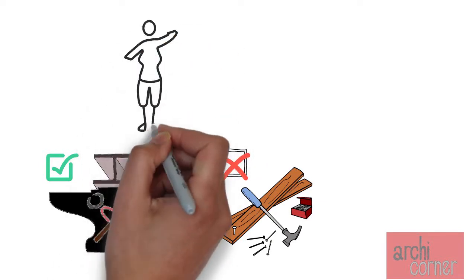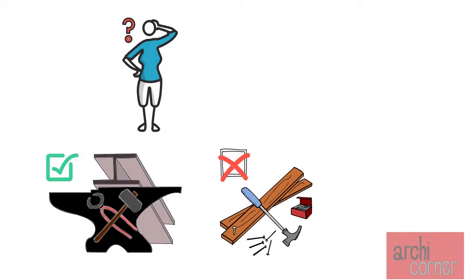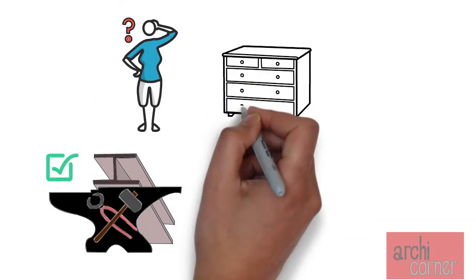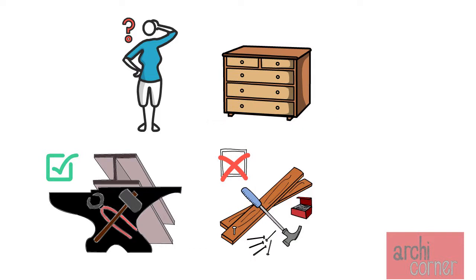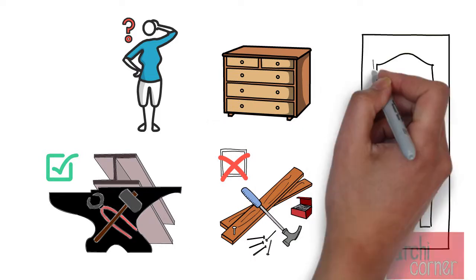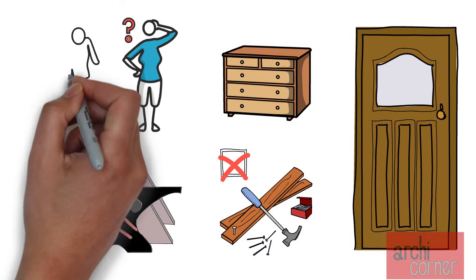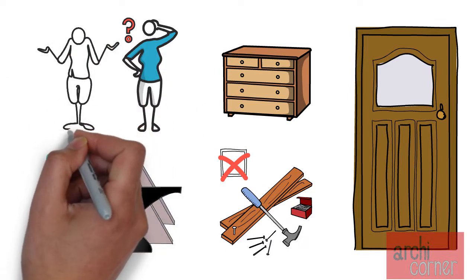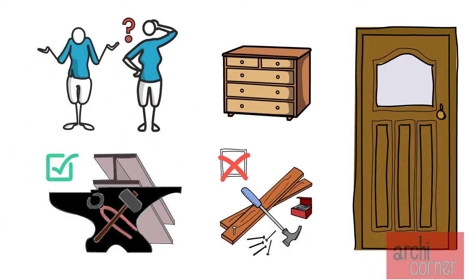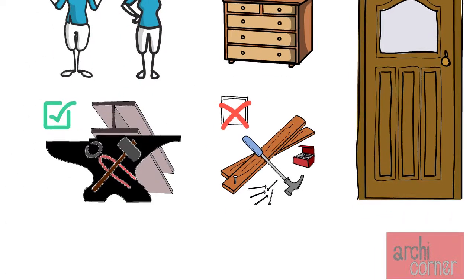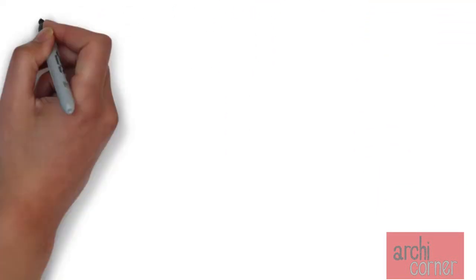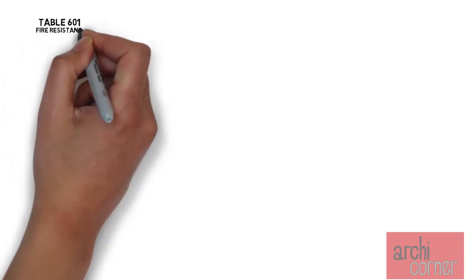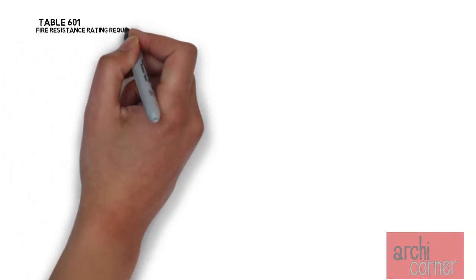Now that doesn't mean that you can't have any wood in your building. After all, most built-in casework and permanently installed doors are made out of wood. So what type of elements have to be non-combustible? To answer this question we must look at table 601.